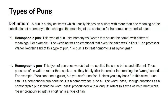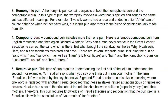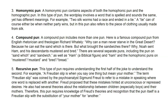A homonymic pun contains aspects of both homophonic and homographic puns — the wordplay involves a word that is spelled and sounds the same yet has different meanings. Example: 'Two silk worms had a race and ended in a tie' — a tie can mean neither party wins, but also refers to a piece of clothing usually made from silk.